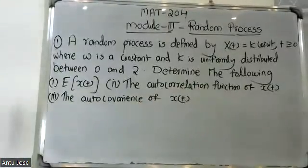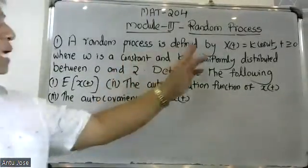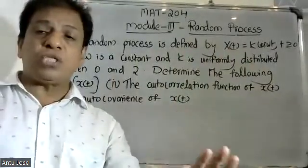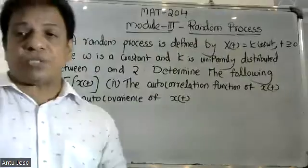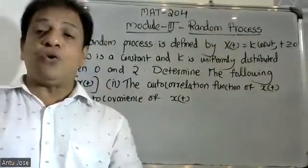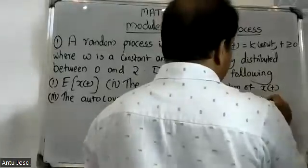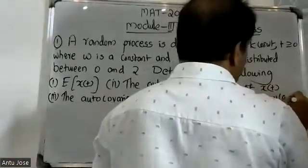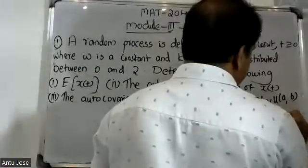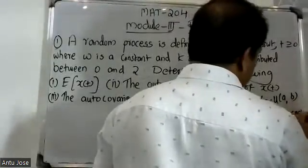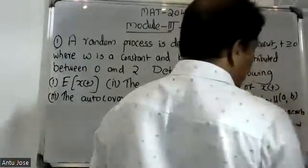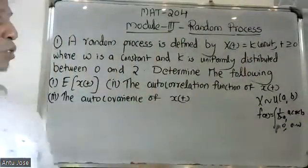In this question, x(t) = k·cos(ωt), and k is uniformly distributed between 0 and 2. ω is a constant. For a uniform distribution, x follows U(a, b), and the probability density function is f(x) = 1/(b−a) for a < x < b, and 0 otherwise.